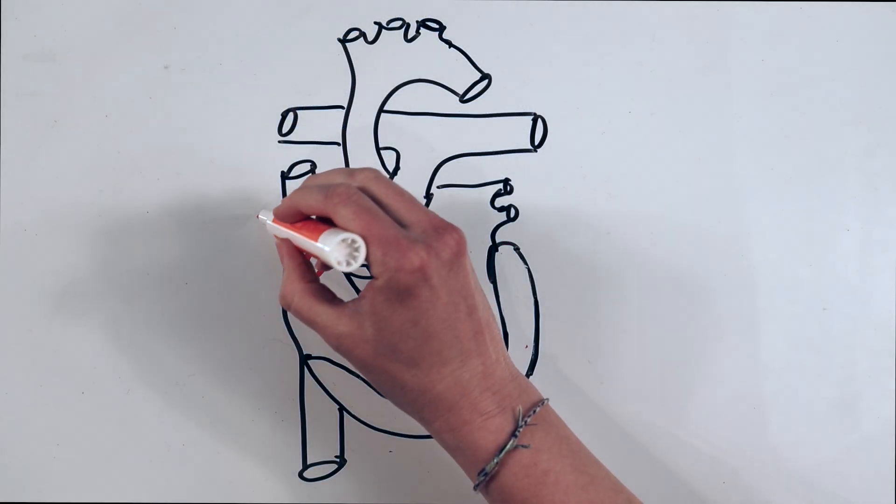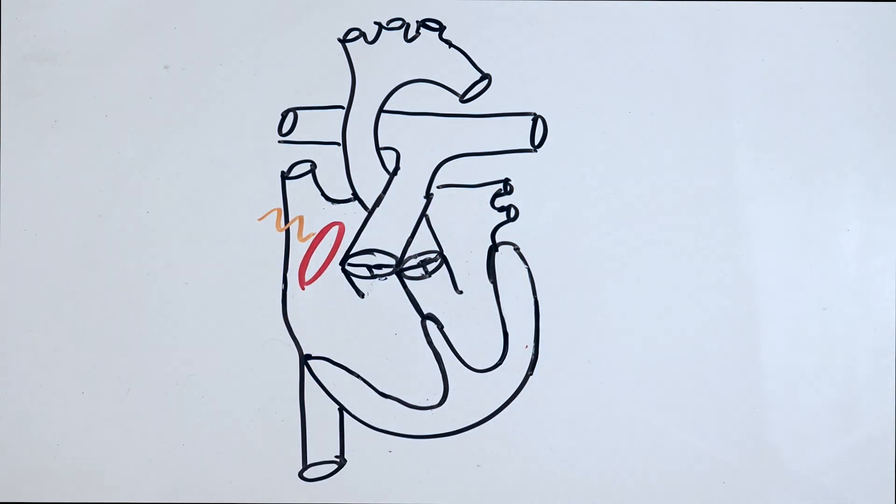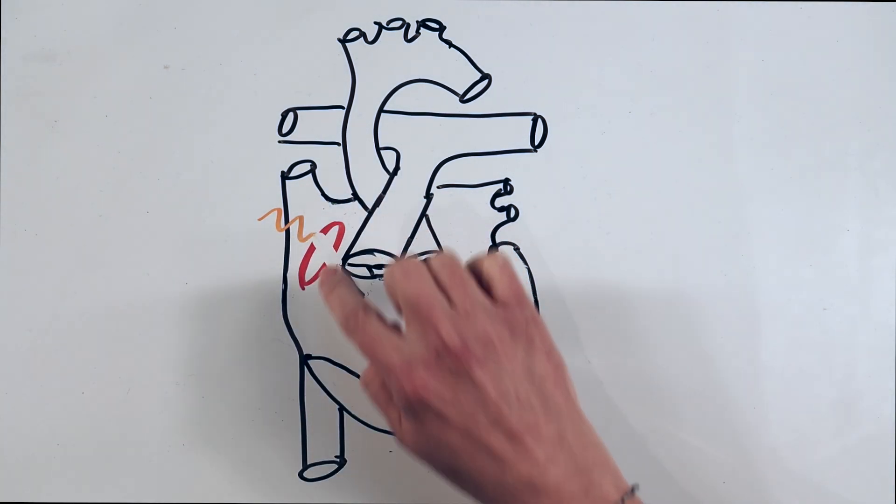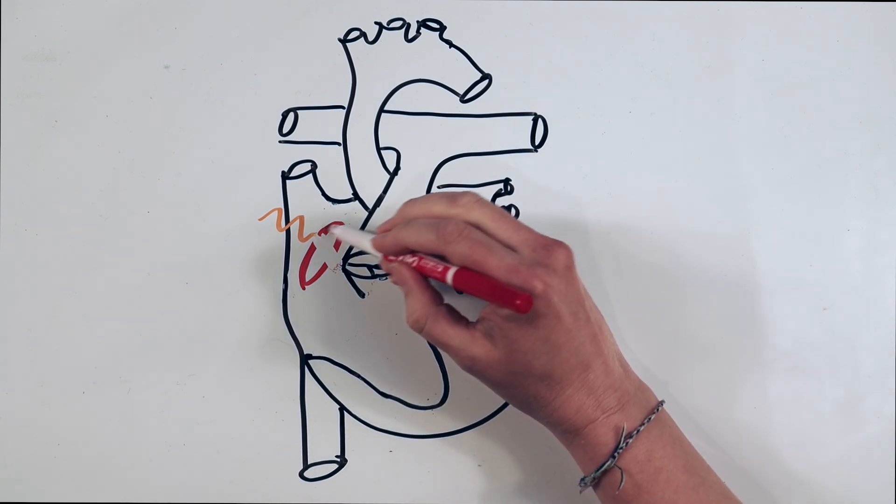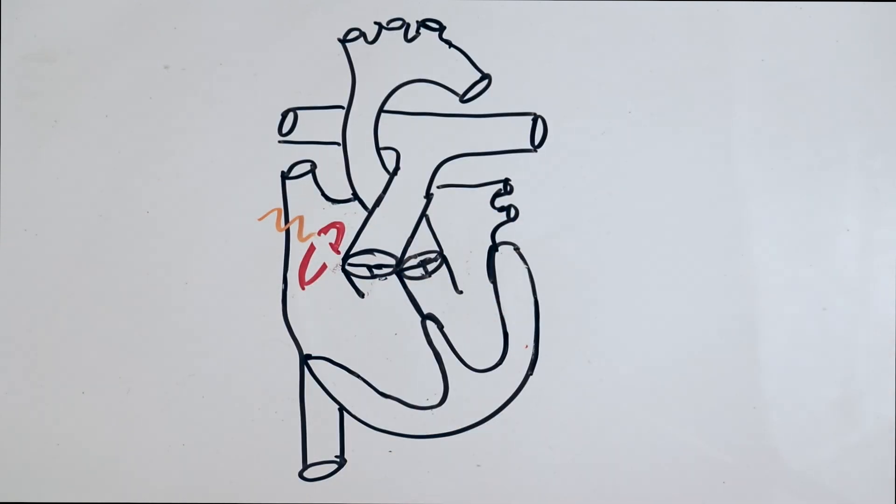Rapid atrial pacing sends electricity across the re-entrant circuit, so when the circuit comes back around and encounters tissue that has not repolarized and can't propagate the signal, the loop ends.